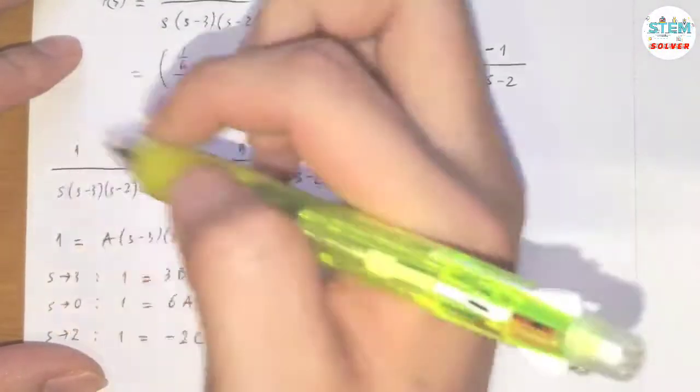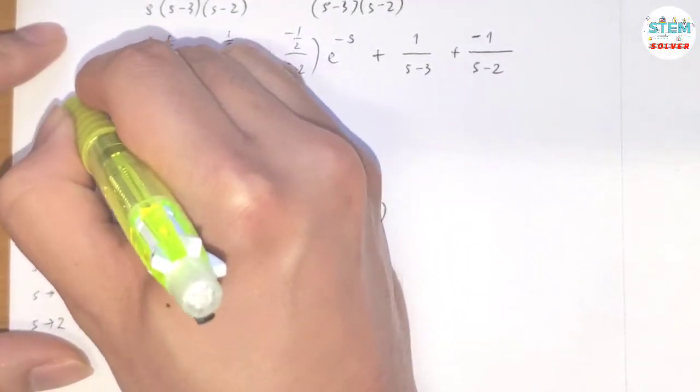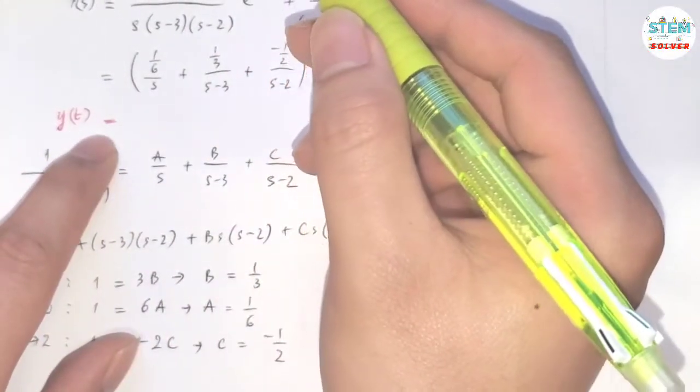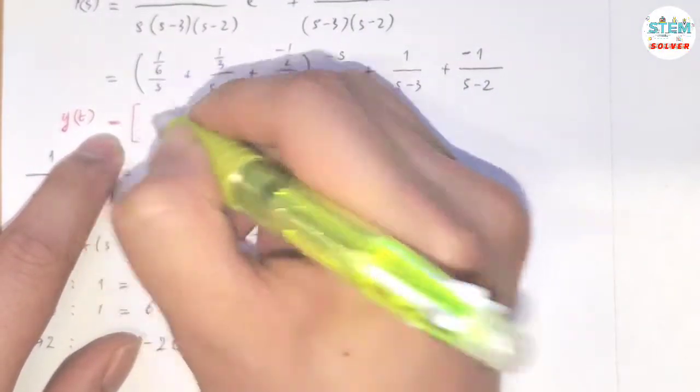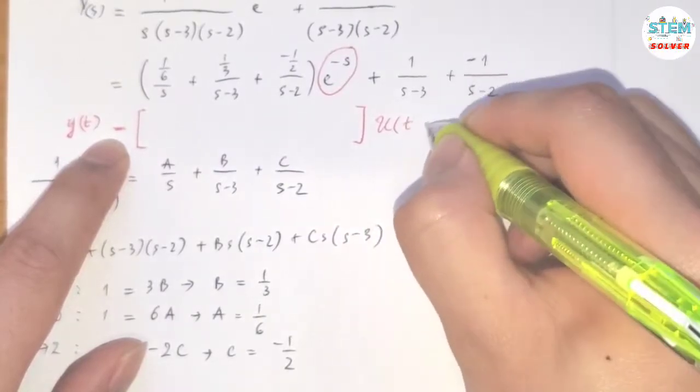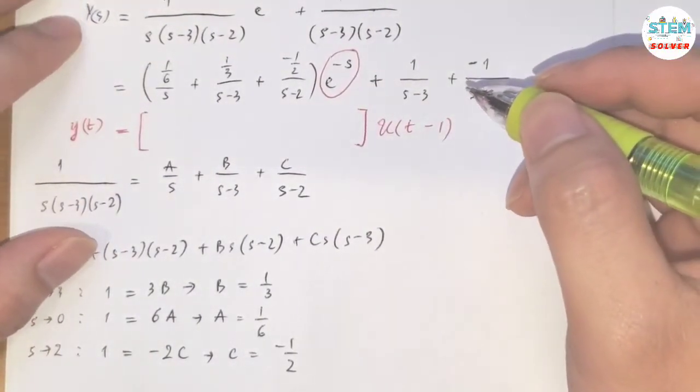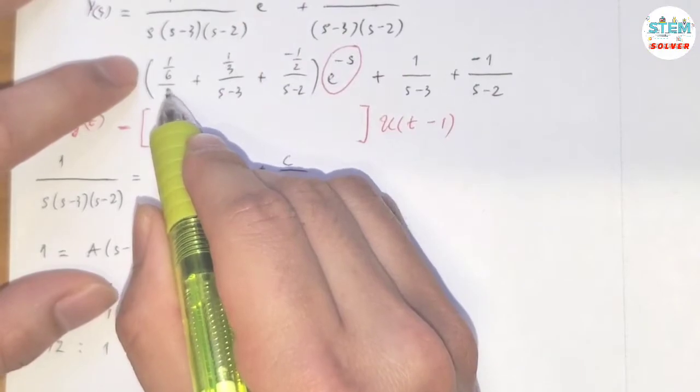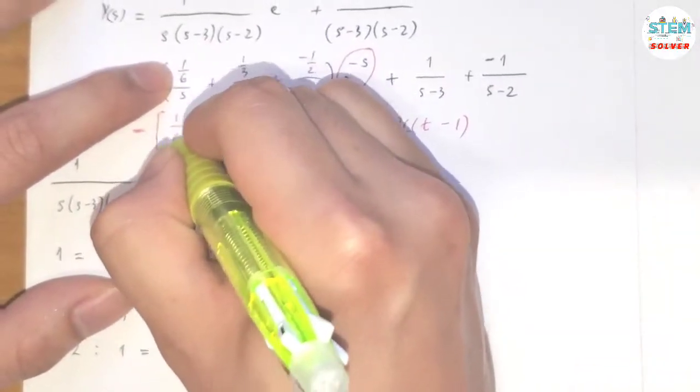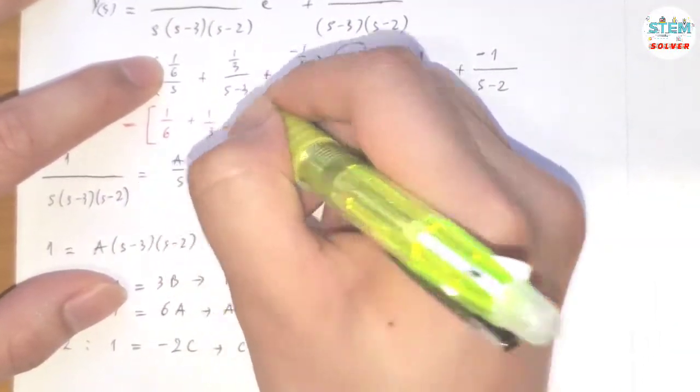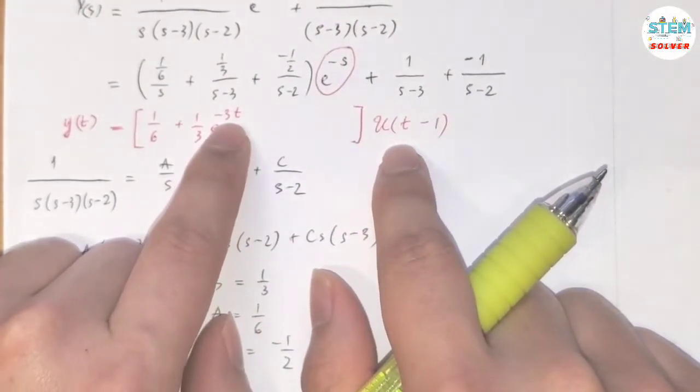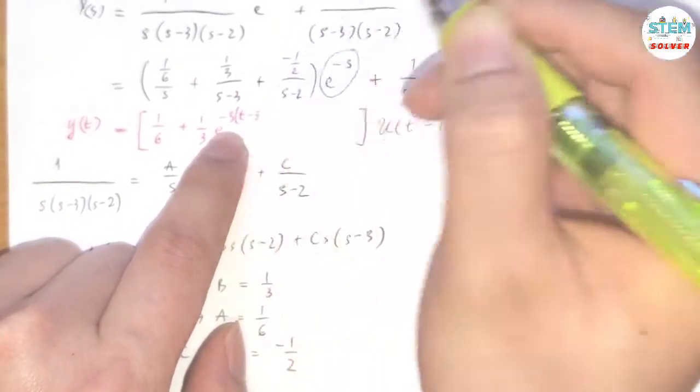Now, take the inverse Laplace on both sides, which gives me: for this one, I'm going to look at this one first, because that gives me u(t-1). Now, back to this one: L inverse of this is 1/6, and inverse of this is 1/3 e^(3t), but because now we have the step function here, so the t has to match up, which means that we need to have t minus 1.